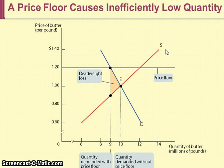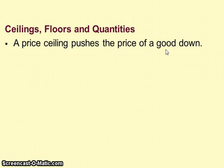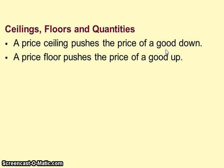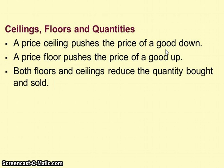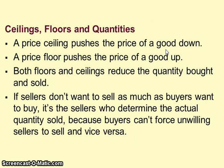The deadweight loss from a price floor — shown in the tan area on the graph — is the loss in total surplus resulting from the price floor. To summarize: a price ceiling pushes the price of a good down, a price floor pushes it up, and both reduce the quantity bought and sold. Whichever is smaller — quantity demanded or quantity supplied — determines the actual number of market sales, since buyers cannot force unwilling sellers to sell, and vice versa.